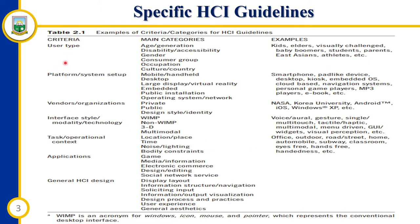Another criterion is the platform or system setup, which includes mobile or handheld, desktop, and large display. Examples in this area include smartphones, pad-like devices, desktop or kiosk versions of applications, or embedded OS. We also think about vendors — whether they are in the private or public sector, and their design style and identity. Interface style, modality, and technology are all examples of criteria with main categories and examples listed in the table.